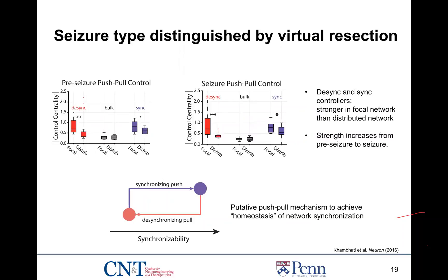Question: during a seizure, is there a temporal sequence to the increased synchronicity and desynchronicity — does it become more desynchronous first and then more synchronous? Yes, it definitely depends on the different phase of the seizure. During the beginning of the seizure you certainly see more of a desynchronous effect, and then as the seizure progresses toward the end — especially during clonic firing — you see a more synchronous effect. During the pre-seizure state you see a little bit of both.